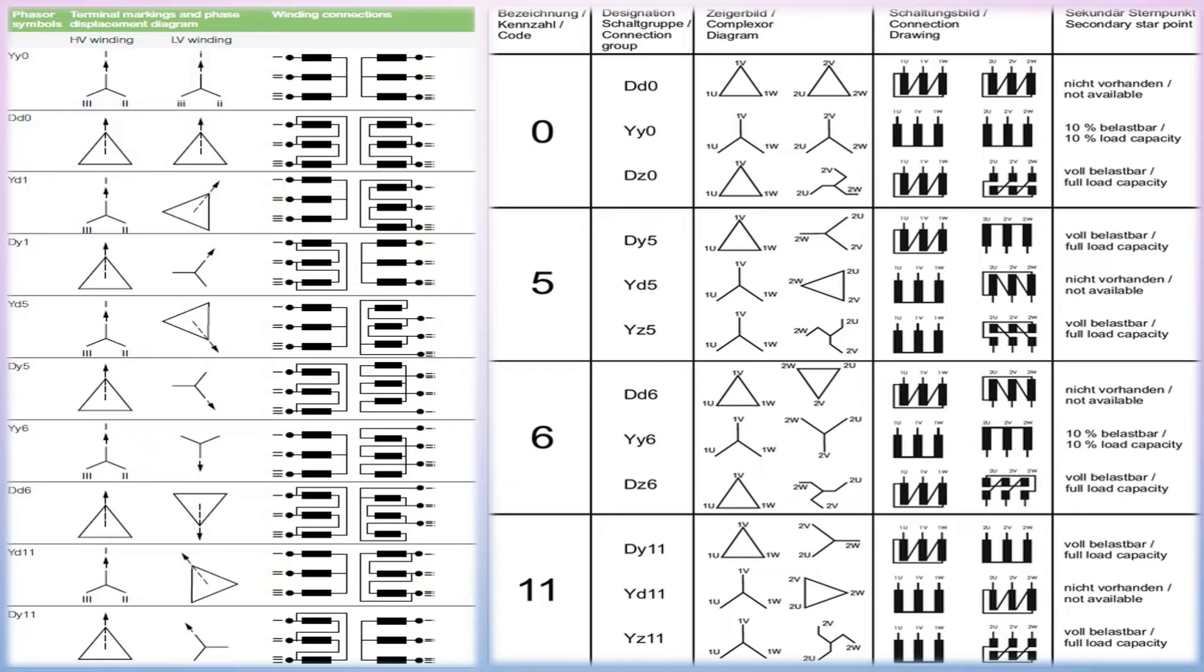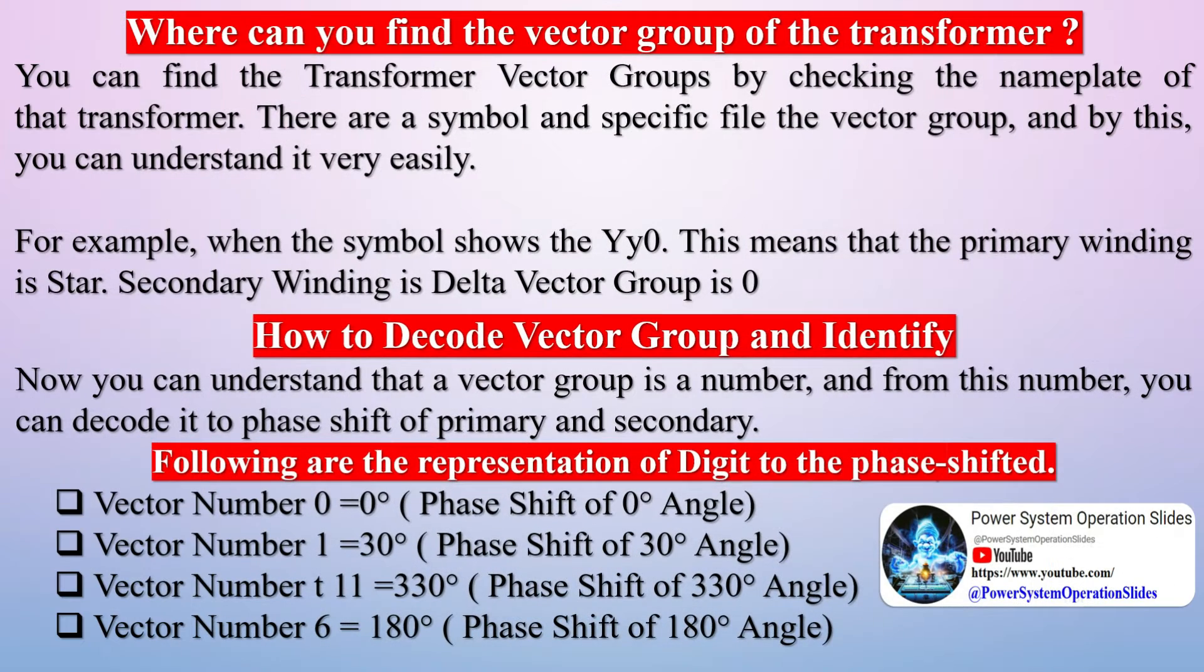The secondary windings are connected similarly. This means that a three-phase transformer can have its primary and secondary windings connected the same delta-delta or star-star, or differently delta-star or star-delta.